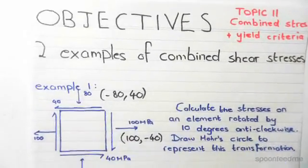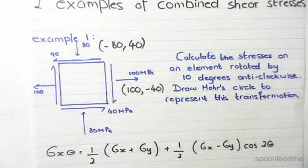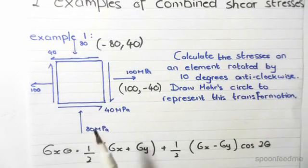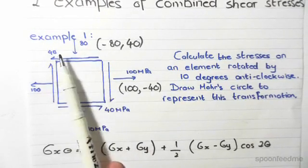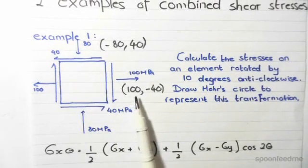So coming back here, you choose two faces. This is the general approach. I usually choose this side and this side. So this point is 100 minus 40.